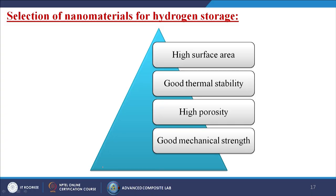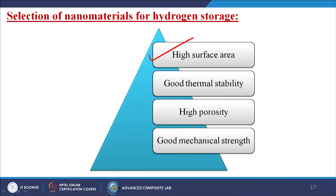Now, what should be the criteria by which we can choose nanomaterials for hydrogen storage? First and foremost, it should have a high surface area. Second, it should have good thermal stability. Third, it should have high porosity. And fourth, it should have very good mechanical strength. These four are the key input parameters by which we have to choose the right materials for storing hydrogen.